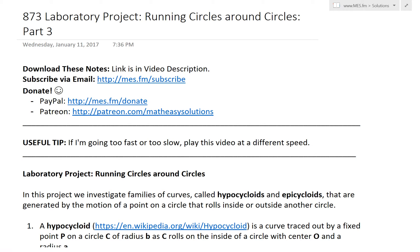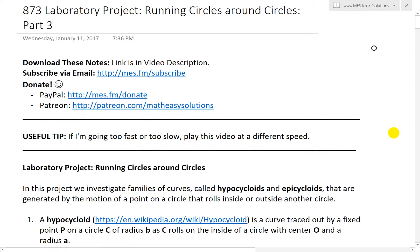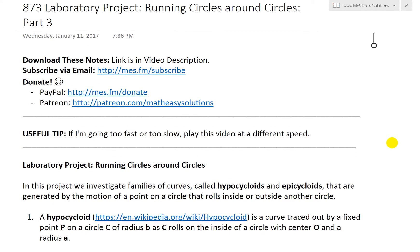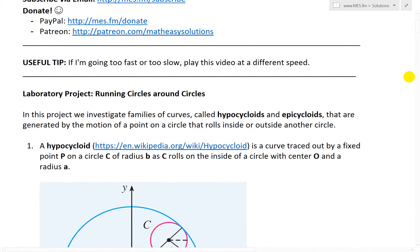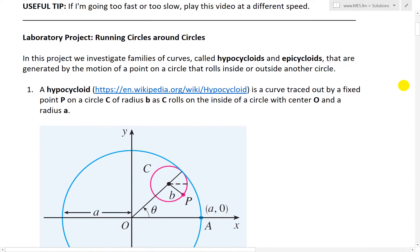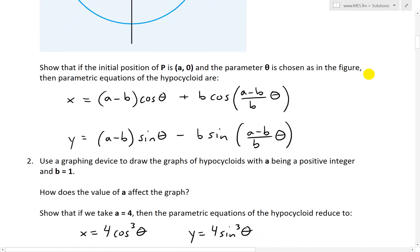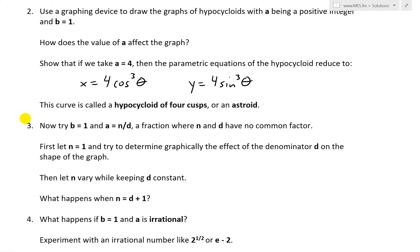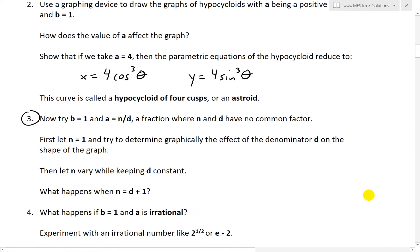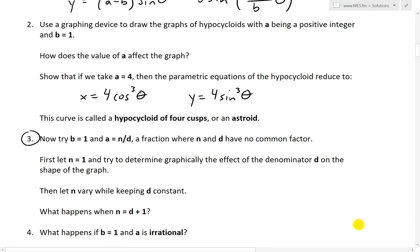Hi, it's time for another Math Easy Solution. I'm going to discuss further into parametric equations and look further into that laboratory project which I've been covering in my previous videos. Now I'll look at part three of the Running Circles Around Circles Laboratory Project. The laboratory projects are very interesting math projects at the end of some of the chapters in my calculus book. We'll go over part three, which is question three. I went over questions one and two in an earlier video, so check those out.